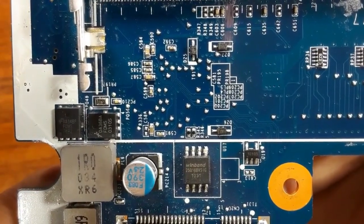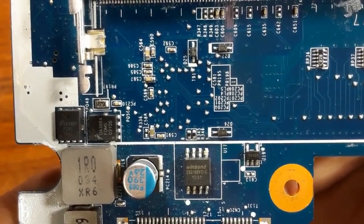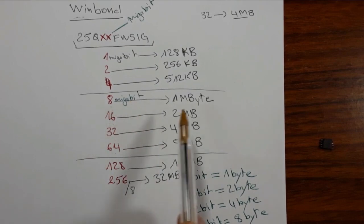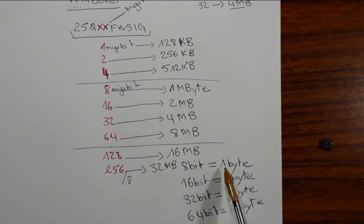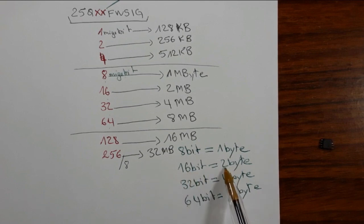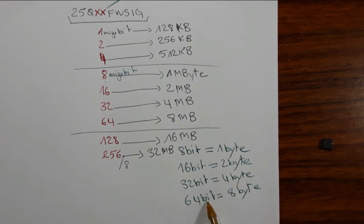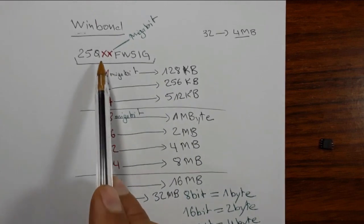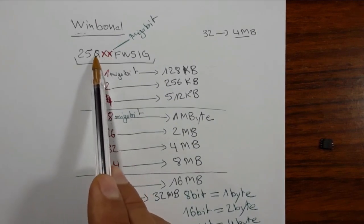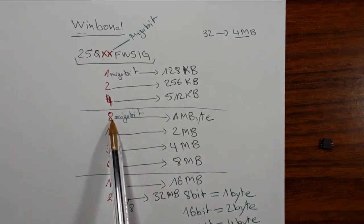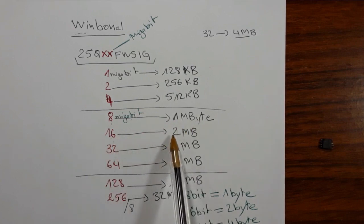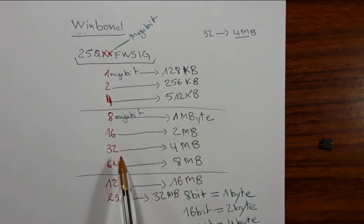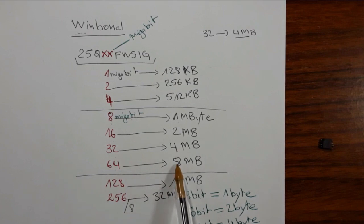16 means the capacity, or the size, of this BIOS is 16 megabit, which means 2 megabytes, because 8 bits equal 1 byte. So 8 megabit equals 1 megabyte. That's why: 16 megabit equals 2 megabytes, 32 megabit equals 4 megabytes, and 64 megabit equals 8 megabytes. Between Q and F in the reference, 8 means the IC size is 1 megabyte, 16 means 2 megabytes, 32 means 4 megabytes, and 64 means 8 megabytes. Always divide by 8.